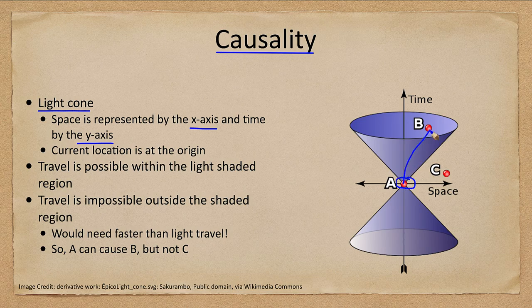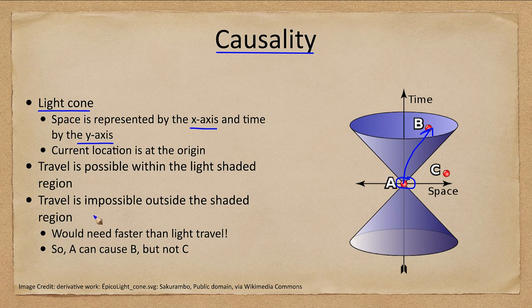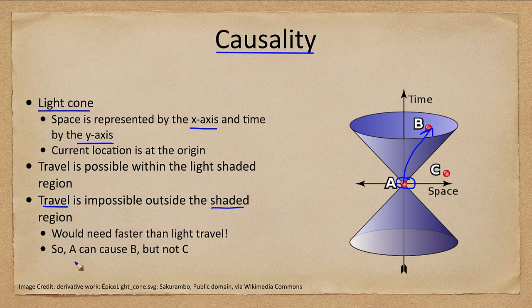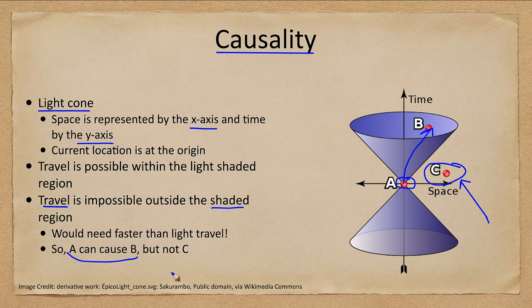It's possible to travel there at less than the speed of light. Travel is impossible outside the shaded region. So A could cause B, but there's no way A could cause C because it would require faster-than-light travel, which is impossible under special relativity.